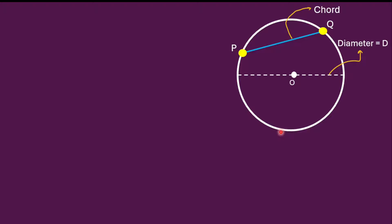This chord divides the circle into two arcs. One is called the minor arc and the other is called the major arc. The major arc runs from Q to P along the larger portion, and the minor arc runs from Q to P along the smaller portion.